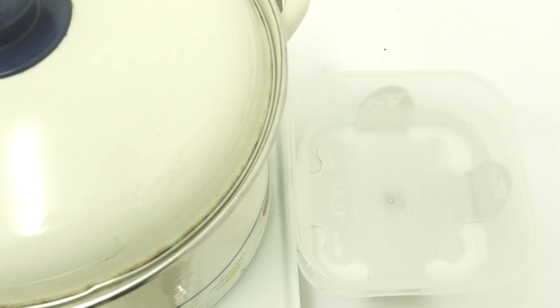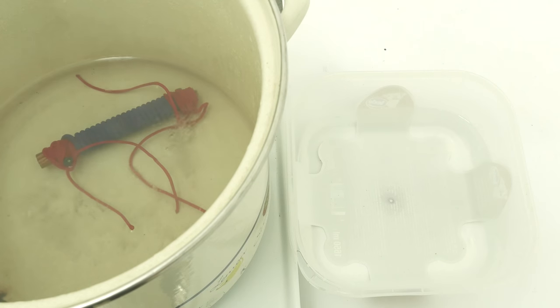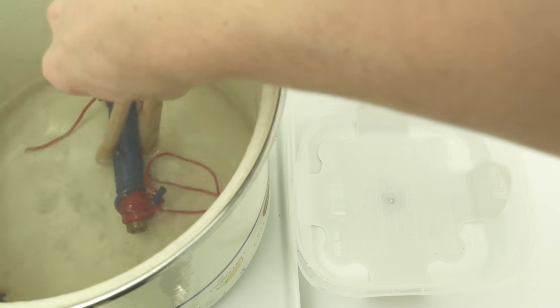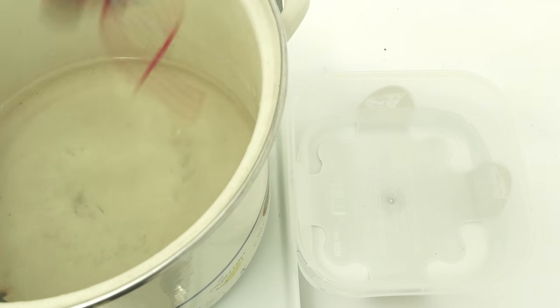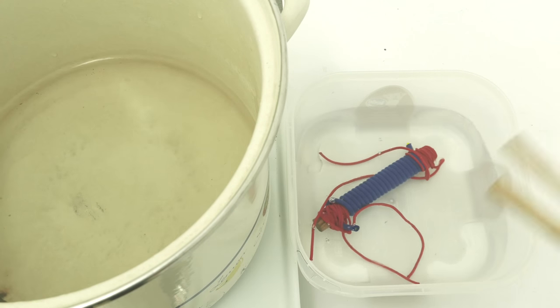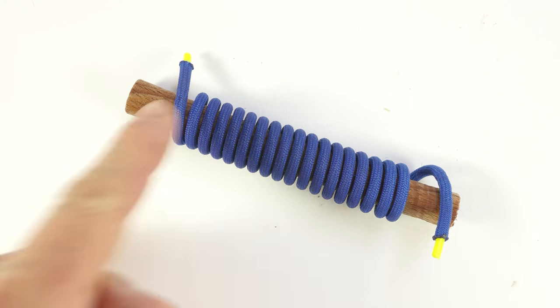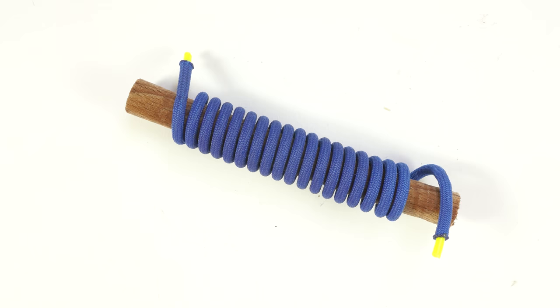After boiling our coil for 10 to 20 minutes, we're going to take it out of the water and place it into some cold water. After that, we're going to dry it out, then continue our lanyard. After letting the lanyard dry, we remove it from the dowel rod.